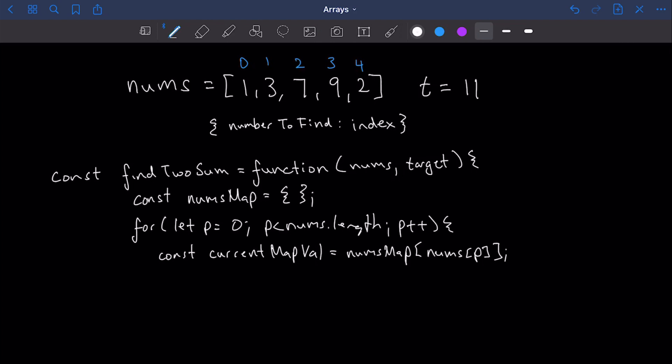Now that we have our current map val, this value could either be an index value that we've got so far, which means that we have a correct answer, or it could be undefined. So that's what we have to account for in our if conditional check. So we're going to say if current map val is greater than or equal to zero.